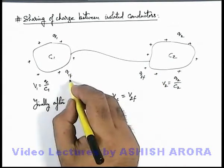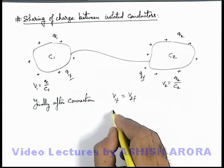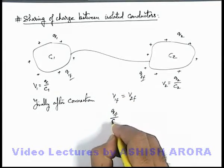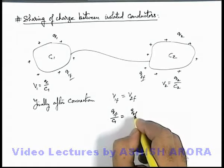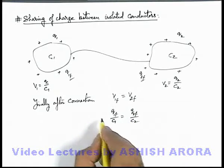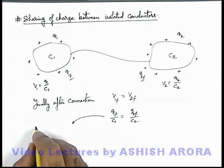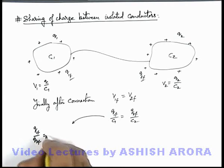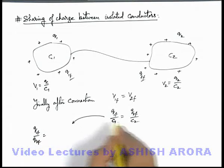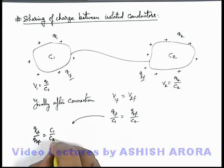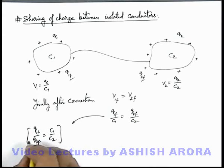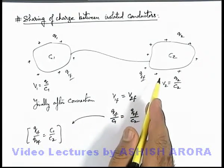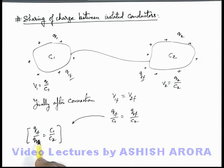Finally, if the charges are q1f and q2f, we can write q1f by c1 must be equal to q2f by c2. From where we can see an important relation that is q1f by q2f is equal to c1 by c2. That means when two conductors are at same potential, their charge is distributed in the same ratio of their capacitances.